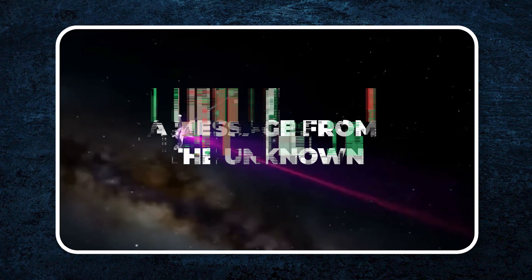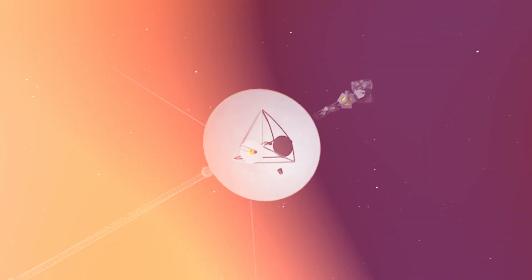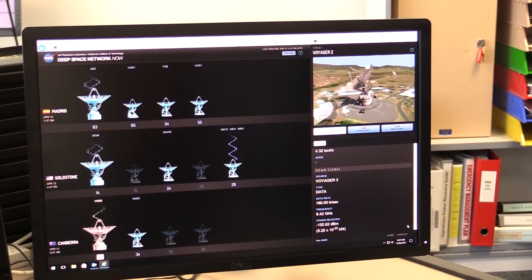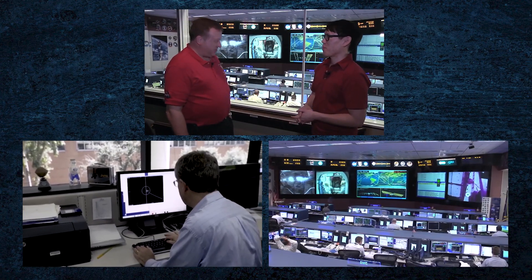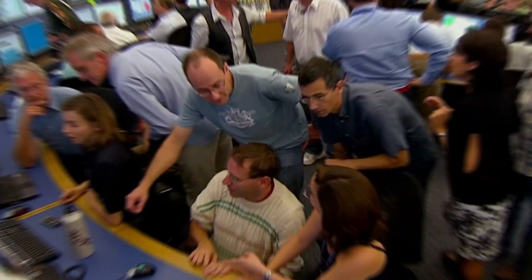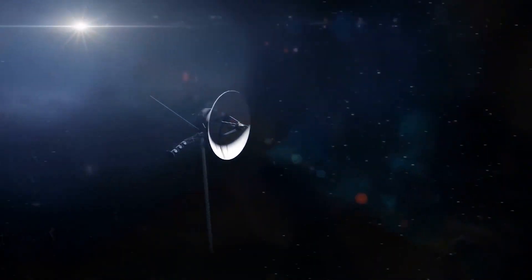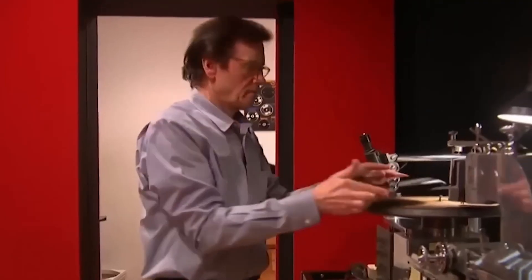A message from the unknown. Voyager 1 just turned back and sent something shocking to Earth. Scientists are freaking out over the data. What did it find? Why is it making everyone nervous? Let's dive into this mystery and figure out what's going on.